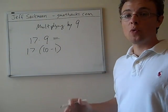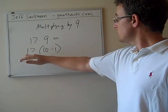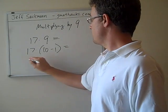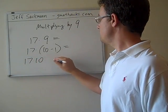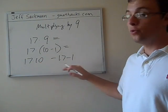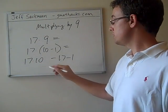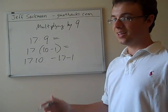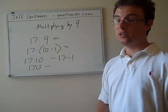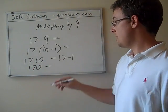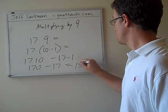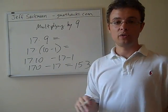So, now we're going to go back to our algebra rules. 17 times the quantity 10 minus 1 is the same as 17 times 10 minus 17 times 1. And both of those, I hope, are very easy. Multiplying by 10 doesn't get much easier than that. That's 170. Multiplying by 1, it definitely doesn't get easier than that. We've got 17. Now we've got a simple subtraction problem. We're at 153.